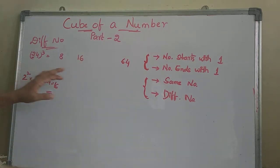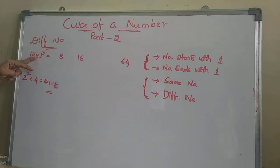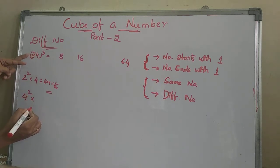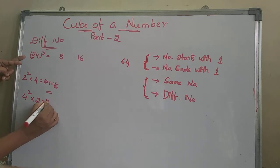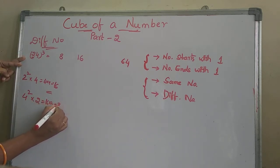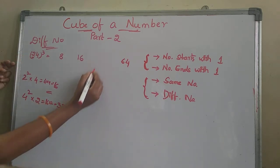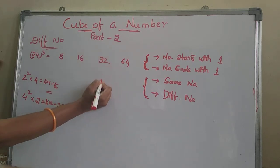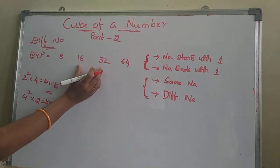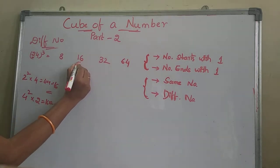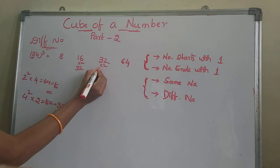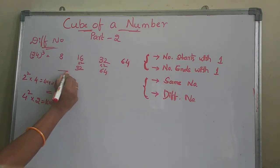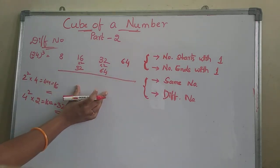After that, for the third digit, we square the second number and multiply by the first: 4 squared into 2 is 16 into 2, which is 32. Write 32 here. After that, the middle 2 numbers are multiplied by 2: 16 becomes 32, and 32 becomes 64. Then we can add all these.